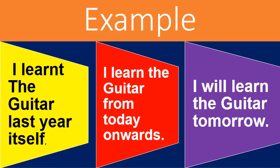I have given three examples for simple past, simple present, and simple future using the verb 'learn.' Simple past: 'I learned the guitar last year.' Simple present: 'I learn the guitar' — from today onwards. Simple future: 'I will learn the guitar tomorrow.' So the first is simple past, the second is simple present, and the third is simple future tense.